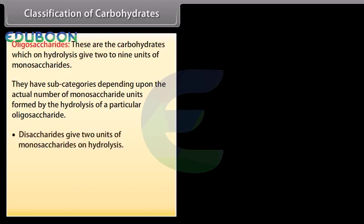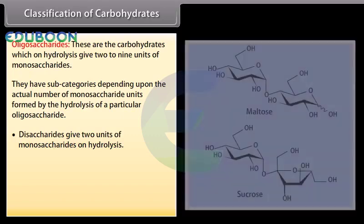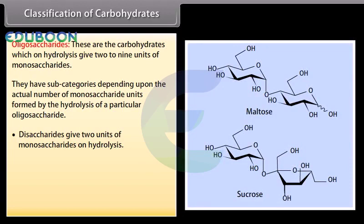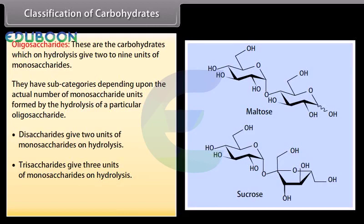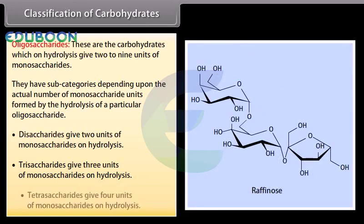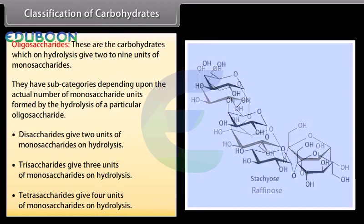Oligosaccharides are carbohydrates which on hydrolysis give two to nine units of monosaccharides. They have subcategories depending upon the actual number of monosaccharide units formed. Disaccharides give two units of monosaccharides on hydrolysis, for example, maltose and sucrose. Trisaccharides give three units, for example, raffinose. Tetrasaccharides give four units, for example, stachyose.